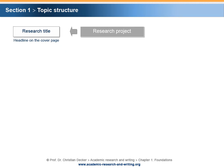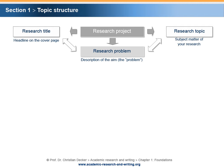The research title is the headline that appears on the cover page of a research report or a research paper. In some cases, the research title is identical with the research topic; in other cases, it might be different. The research topic is the subject matter of your research. In all cases, an underlying research problem is at hand, which describes the aim or problem to be investigated in the research project.